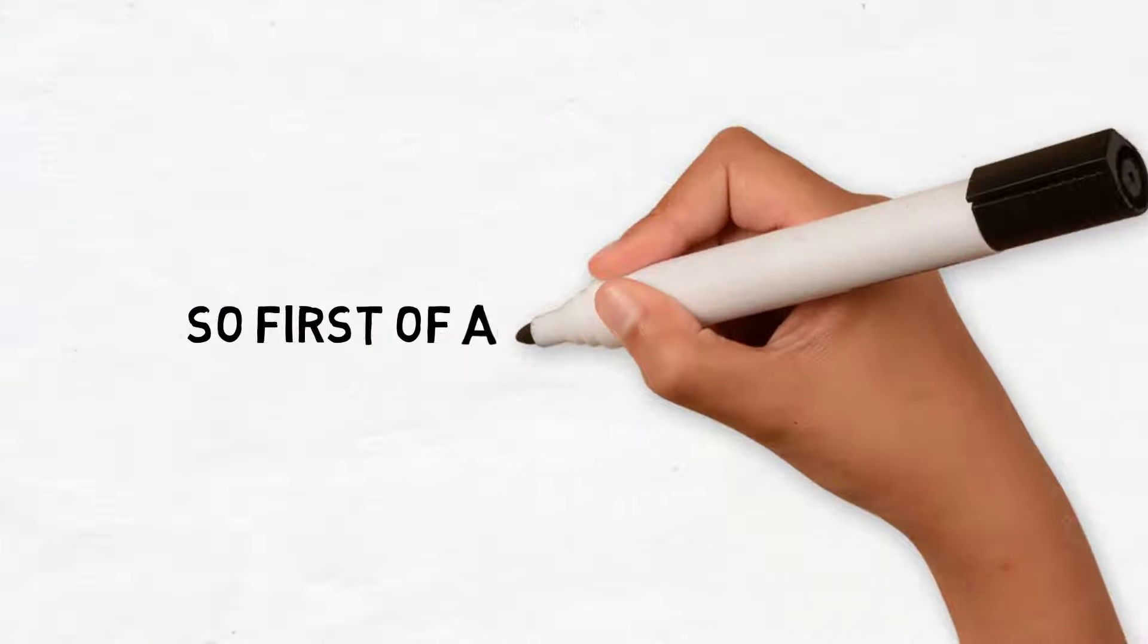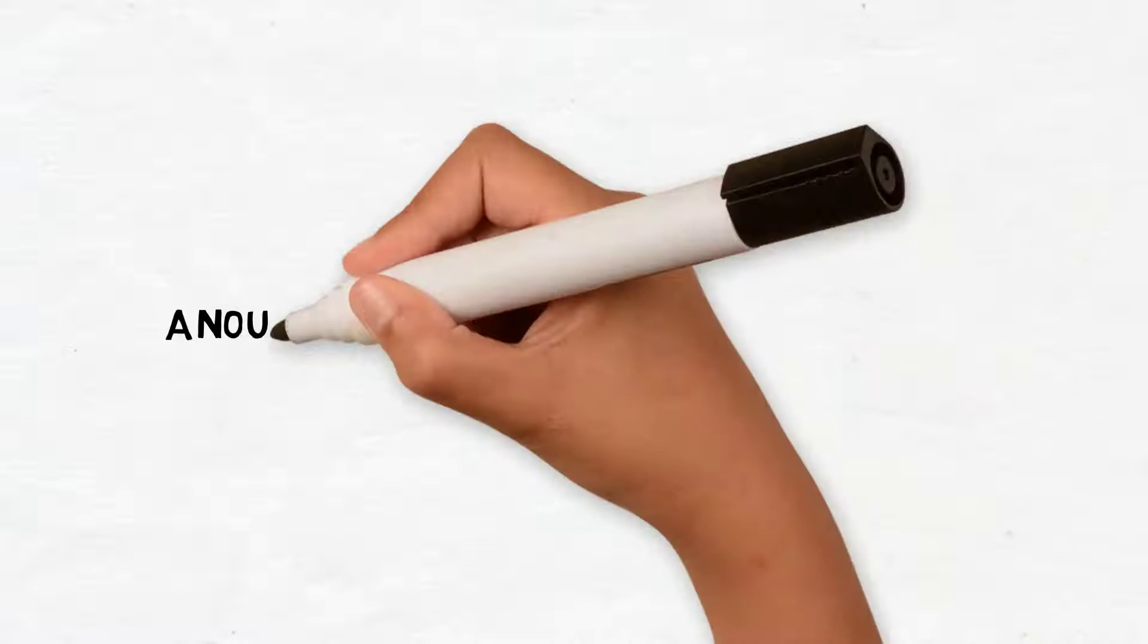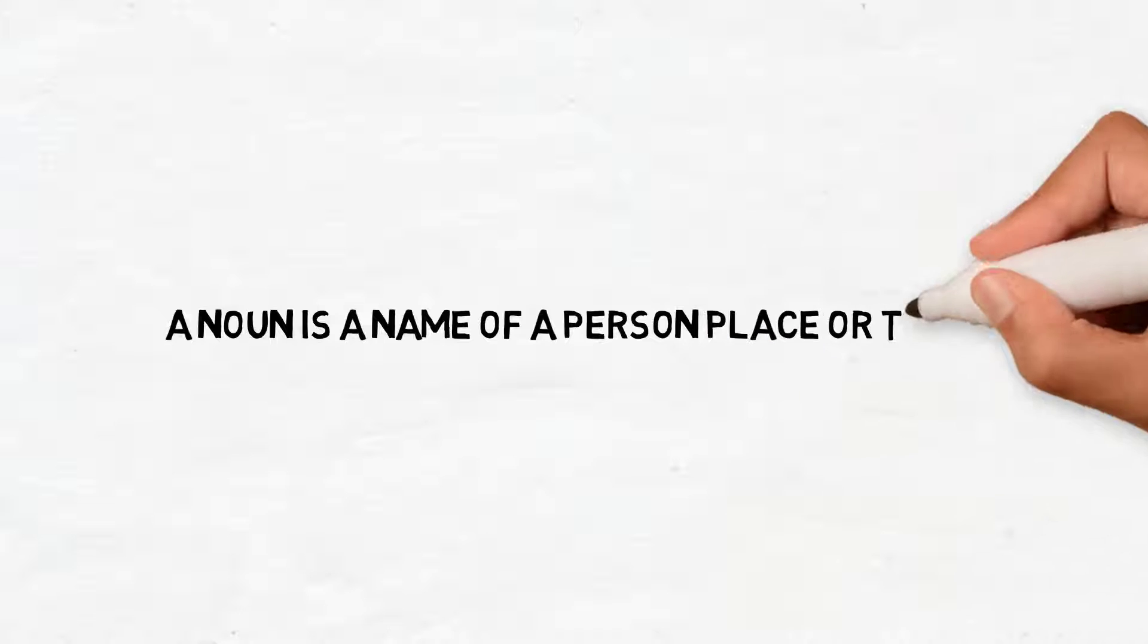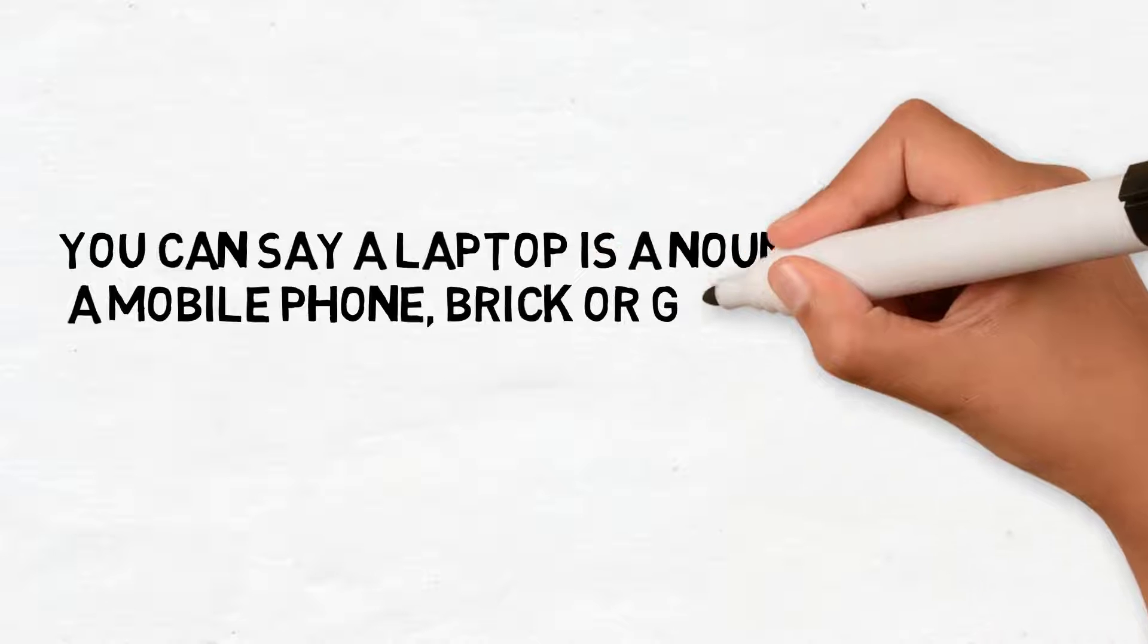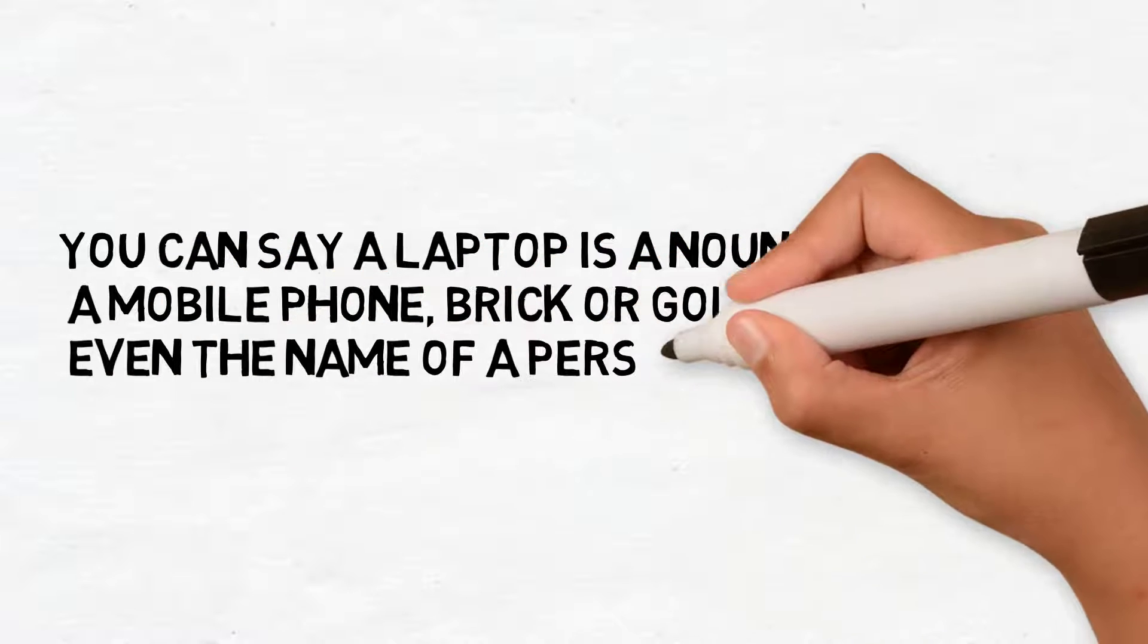So first of all, what is a noun? A noun is a name of a person, place, or thing. You can say a laptop is a noun, a mobile phone, brick or gold, and even the name of a person is called a noun.